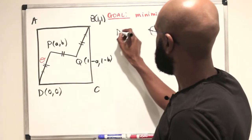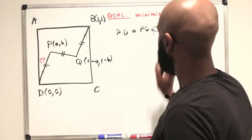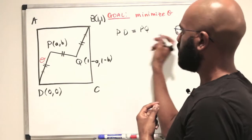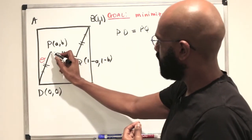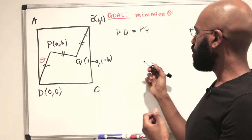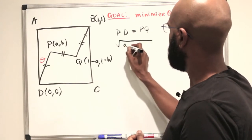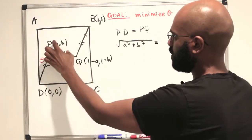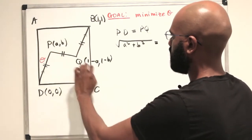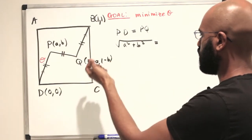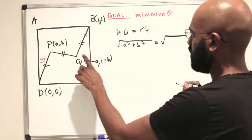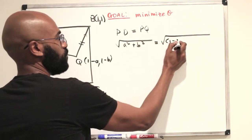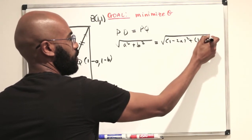We're also given that PD equals PQ, and that gives us a constraint on A and B. The length of PD is the square root of A squared plus B squared. For PQ, we take the differences in coordinates: the x-difference is 1 minus A minus A, which is 1 minus 2A, and the y-difference gives 1 minus 2B. So PQ equals the square root of (1 minus 2A) squared plus (1 minus 2B) squared.